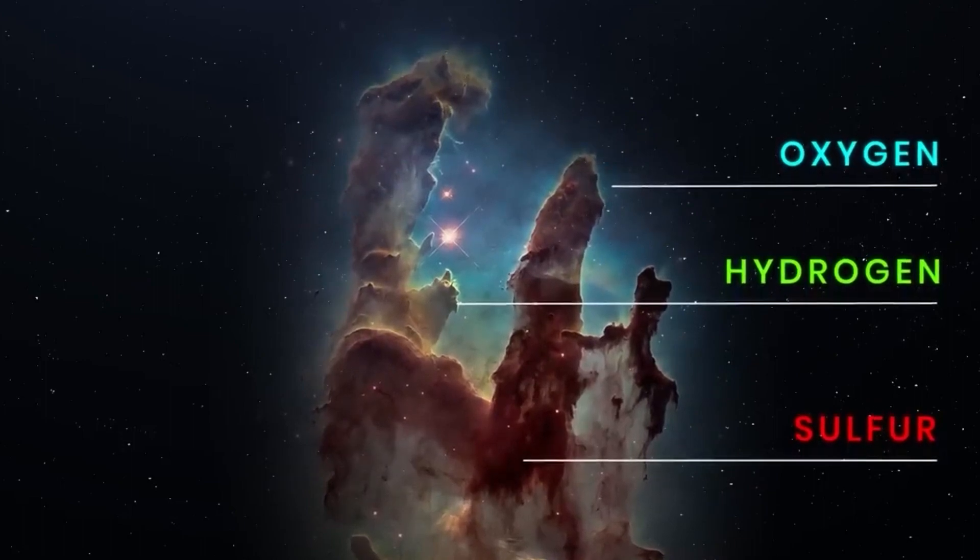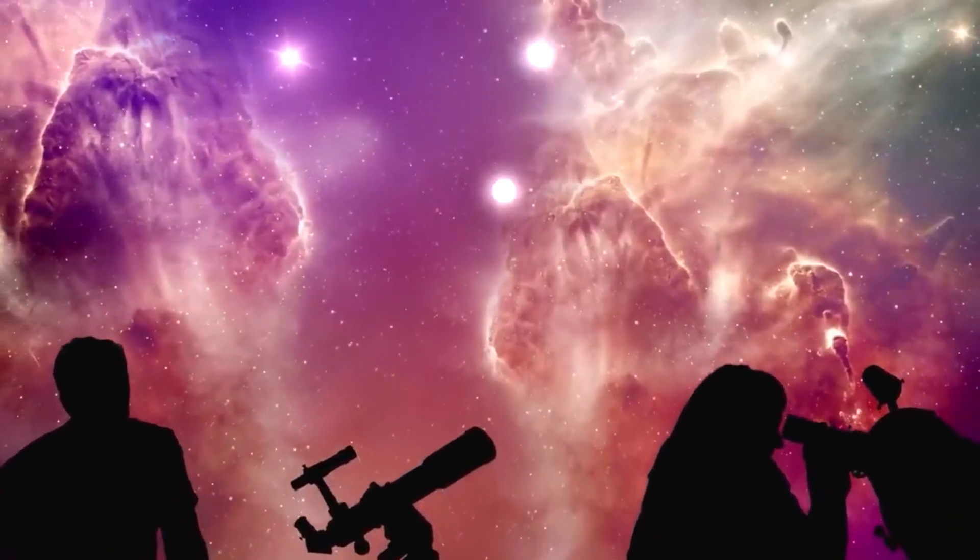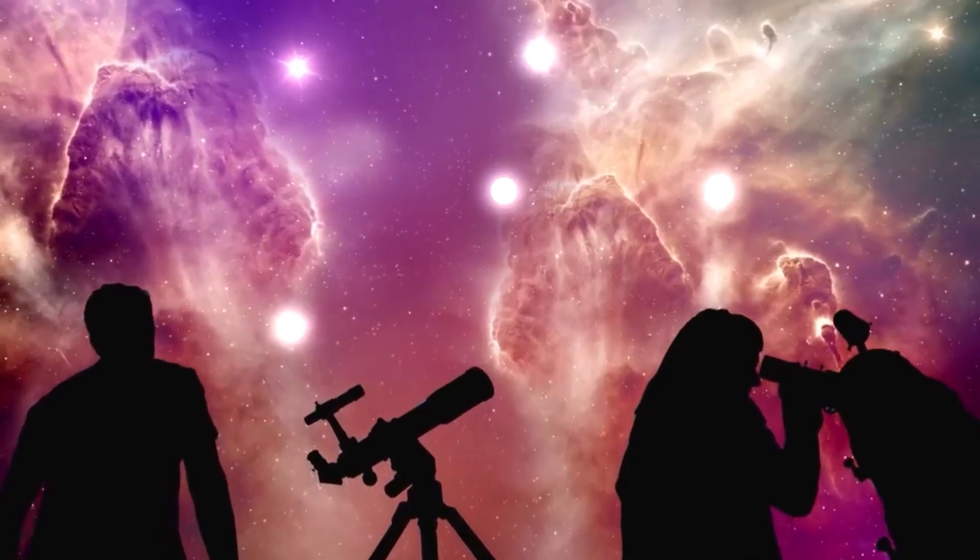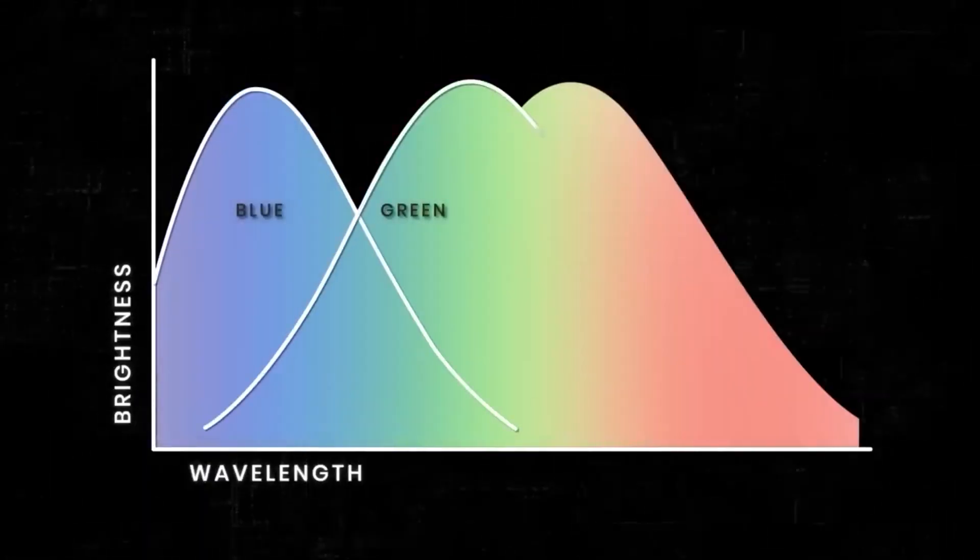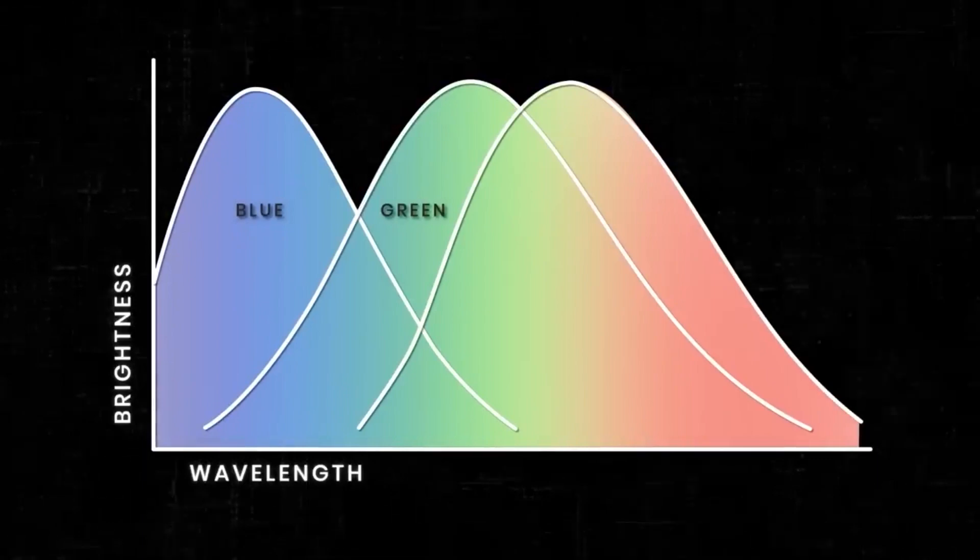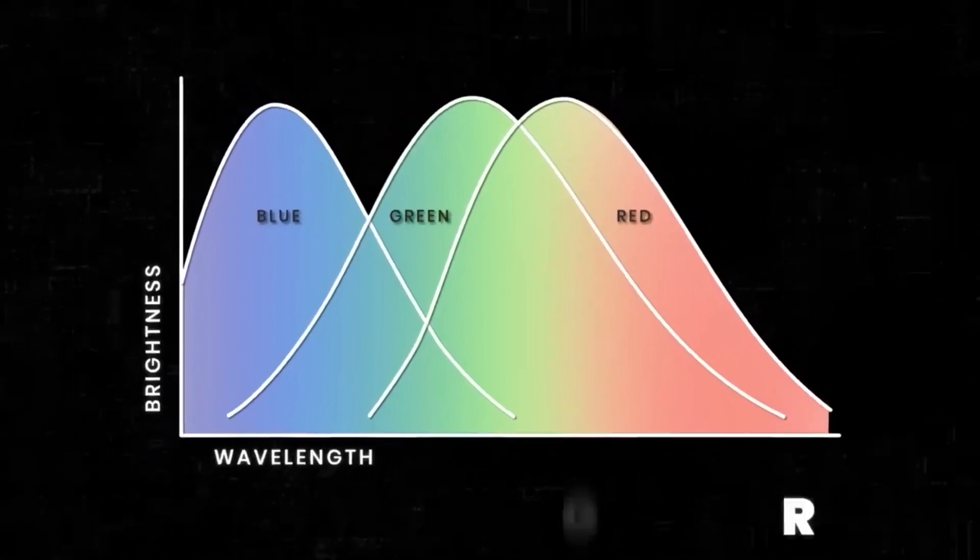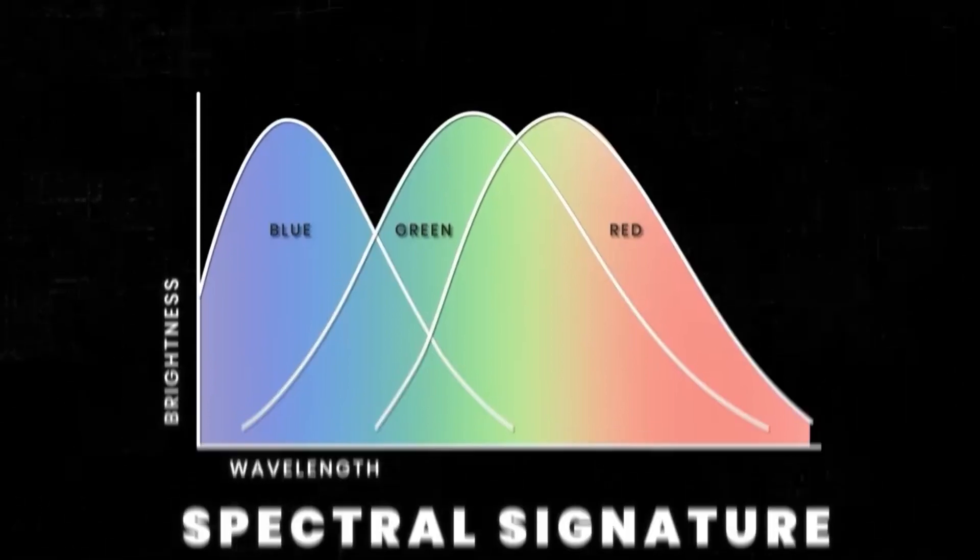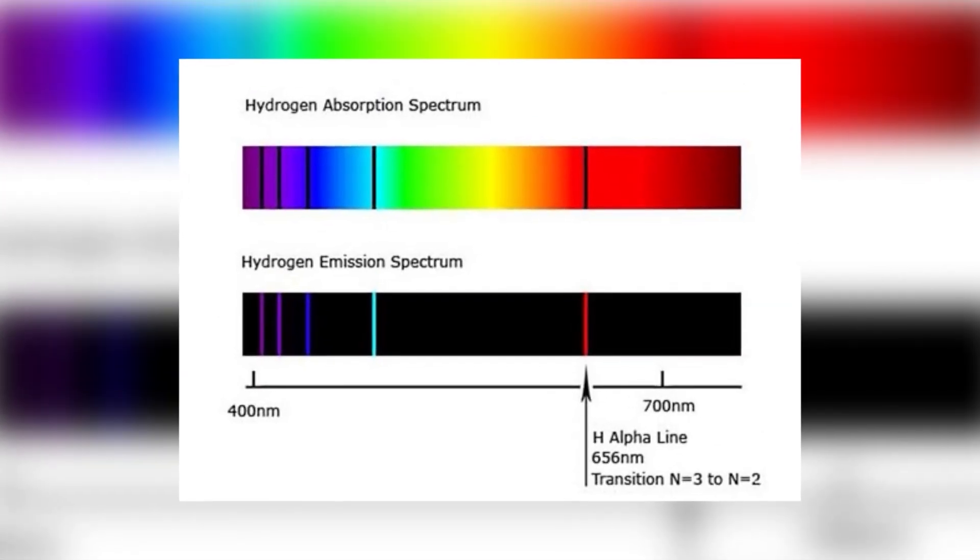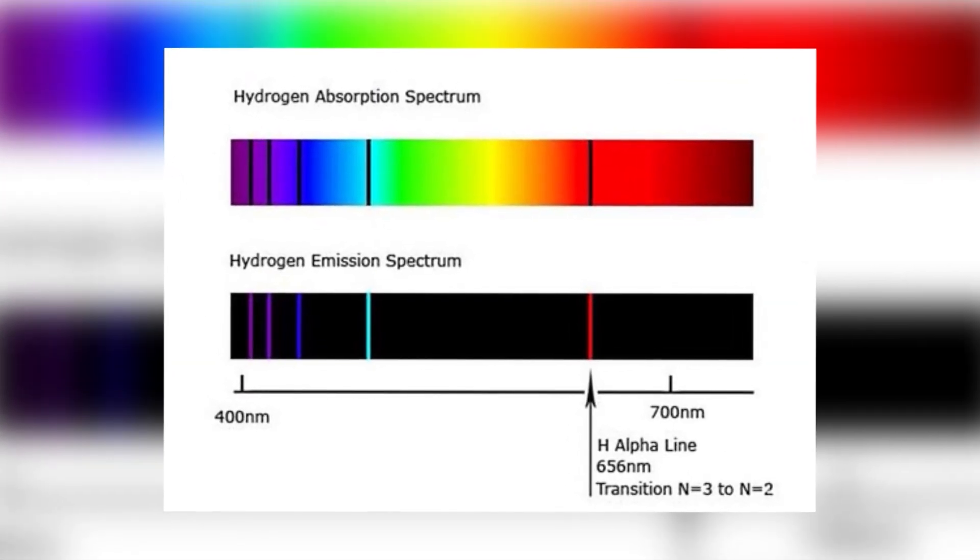But this is where a question arises. Could we see that these are the actual colors of those elements? Well, not really, because each of those elements has a unique set of absorption and emission lines, and the pattern of lines is termed as a spectral signature.